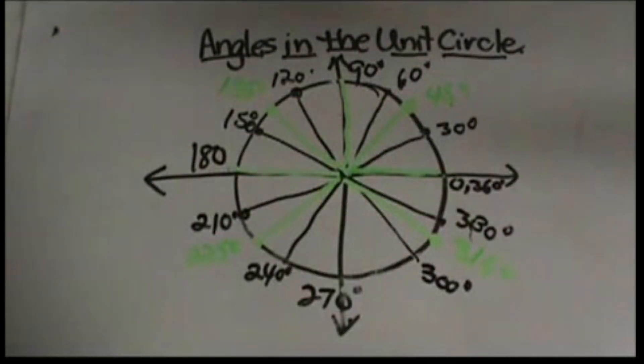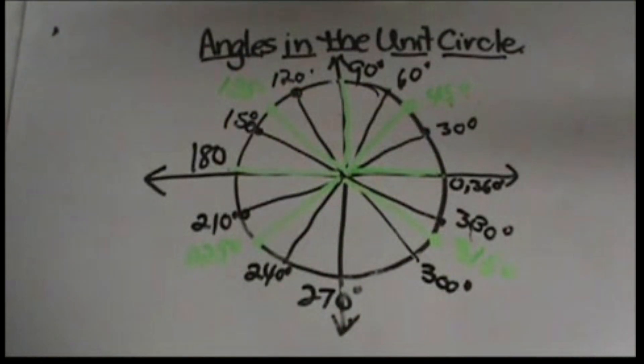So those are the two families: the 30-60-90 group and the 45-degree angle group.